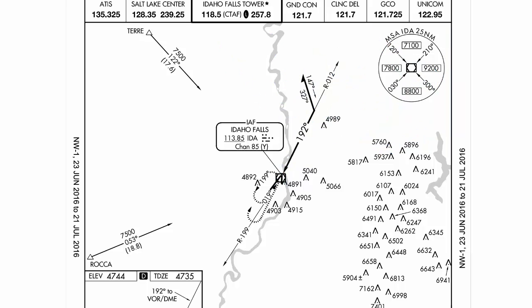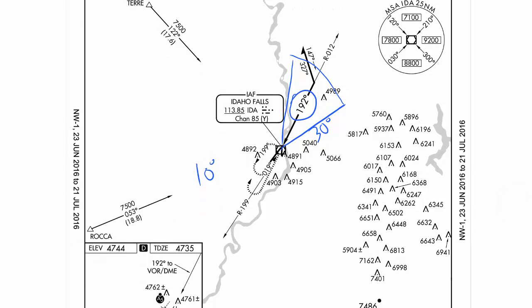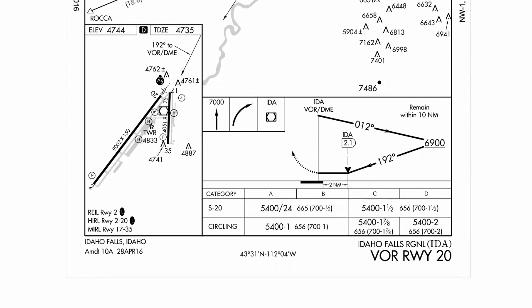A straight-in landing is one in which the approach takes you within 30 degrees of the runway centerline. In this case, the final approach course is 192, and you're landing runway 20, and in Idaho Falls that's roughly a 10 degree difference. So because you're within 30 degrees, this approach also has a straight-in landing. Straight-in landings are also shown down in the minima section where you have S20 for straight-in, and the minimums are going to be lower than circling minimums, which are not straight-in.